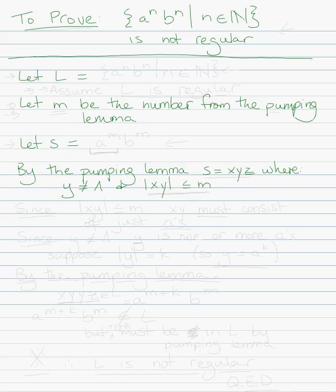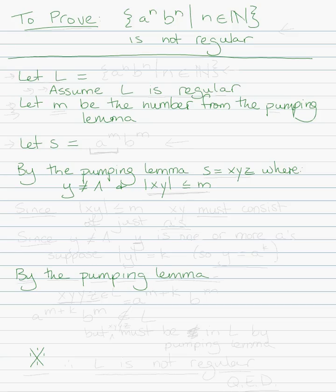And then we're going to do some of our proof under that, and then what we're going to say is, by the pumping lemma, this magic string that we picked, when we pump it, something's going to go wrong. And so then we're going to say we have a contradiction. Please — the first thing that we should write right here is 'assume L is regular.' So we let L equal and assume L is regular.